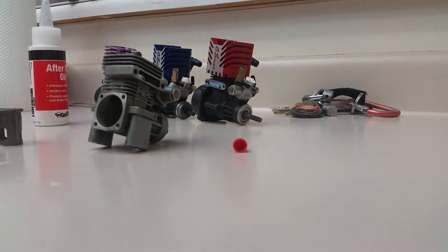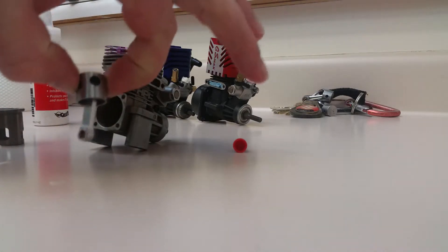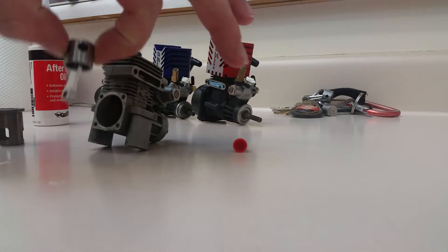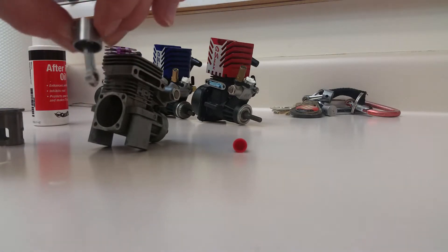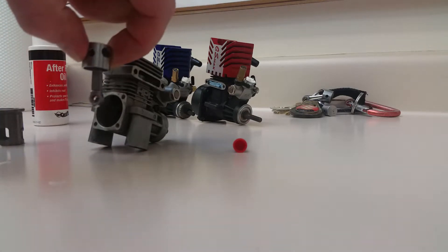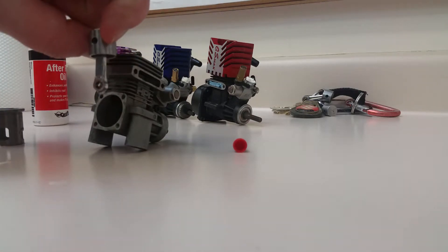Okay, so we see the hole in the piston. We want that facing the opposite way to the exhaust port, so we don't want this lined up this way, we want it lined up that way.